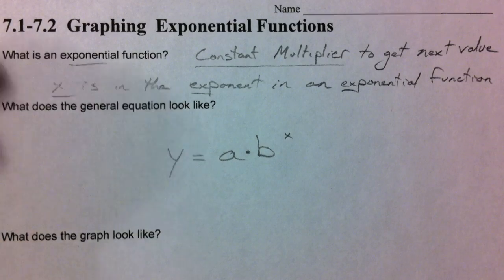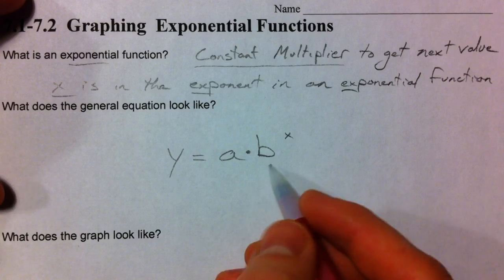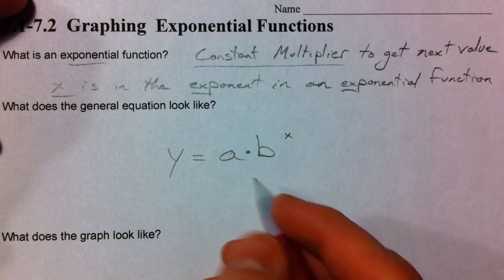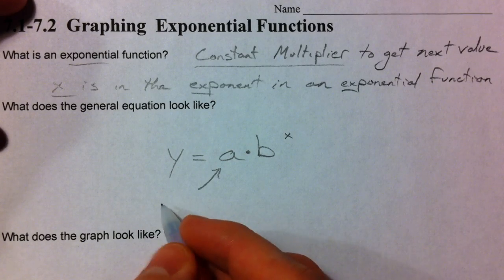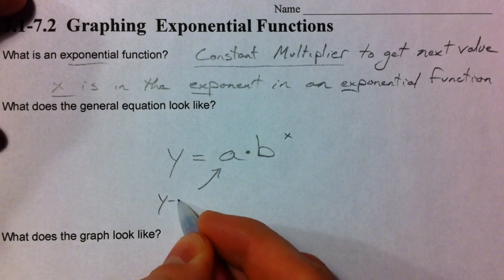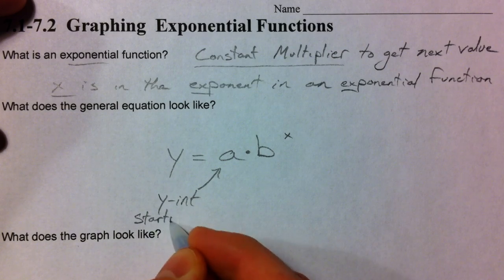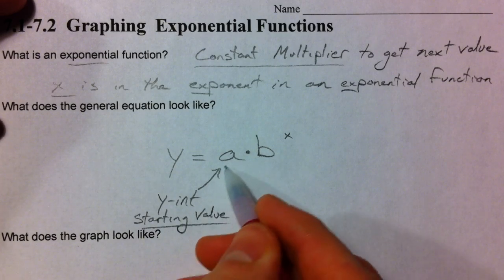We're going to adapt this, and we're going to start transforming it and stuff in other forms. But this is the general form. We're going to be able to add and subtract things on the end. But this a value, as we saw before, is going to act like our y-intercept. It's going to be your starting value.